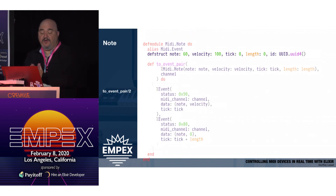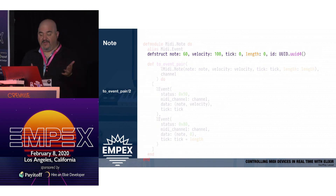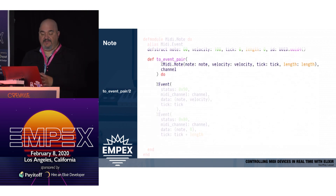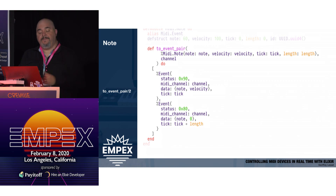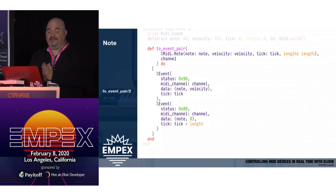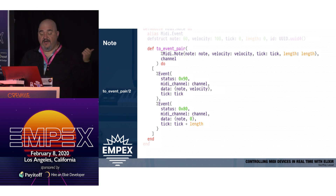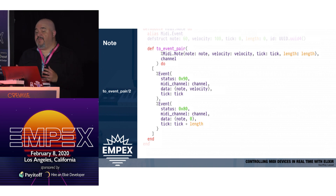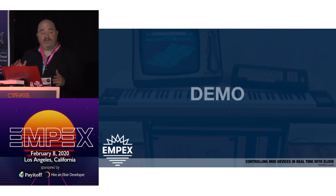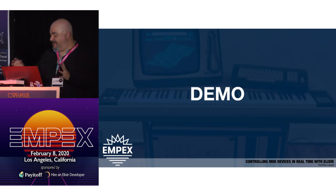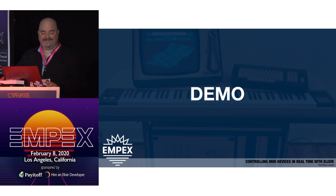Here's our MIDI note struct with the note, velocity, tick, and that kind of information. Here's the two-event pair — each event is its own struct. 0x90 in hex is note on, and 0x80 in hex is note off. I send that information to a library called PortMIDI, which actually sends the information out over the MIDI channels. Now let's do a quick live demo — you know how live demos go.